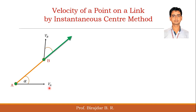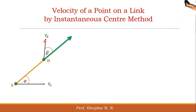The velocity of B makes an angle beta with the link AB, but you do not know the magnitude of velocity at point B. So that is what we are going to find out by using the instantaneous center method.